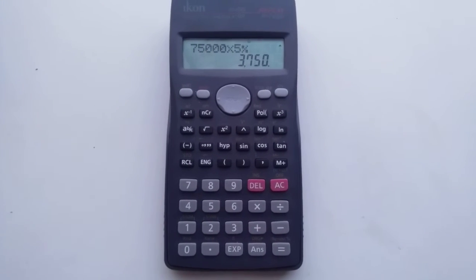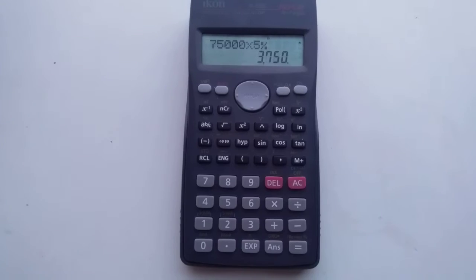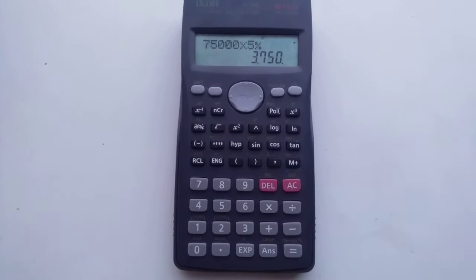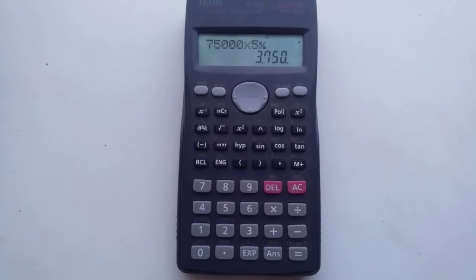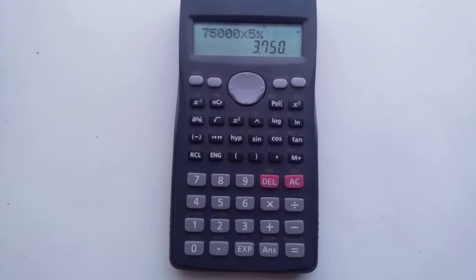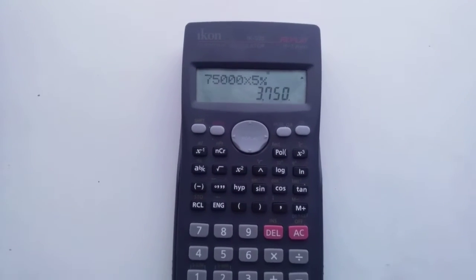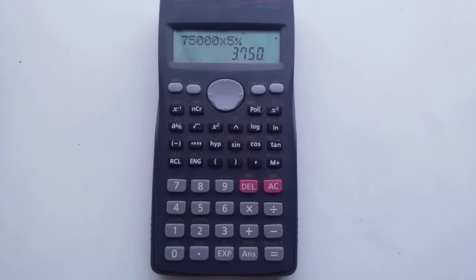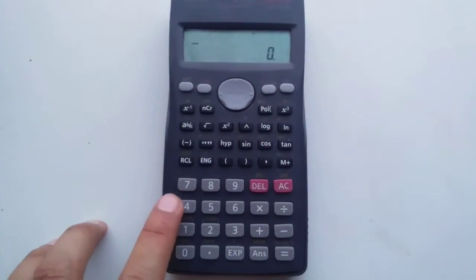So 3,750 is the 5% of 75,000. So this is very easy, you can see on your calculator what's exactly going on, how much you are calculating, what's the total amount. So scientific calculator is very good to handle all kind of these percentage questions.